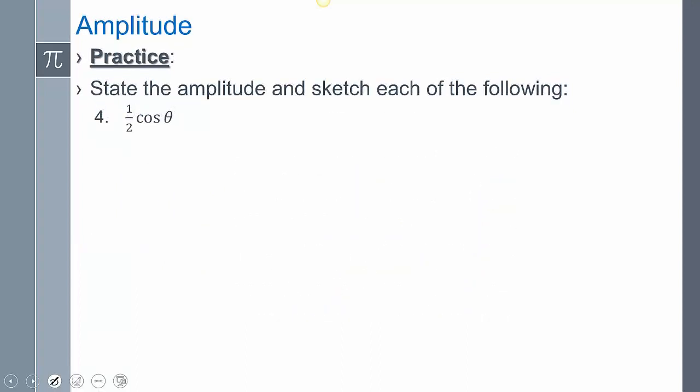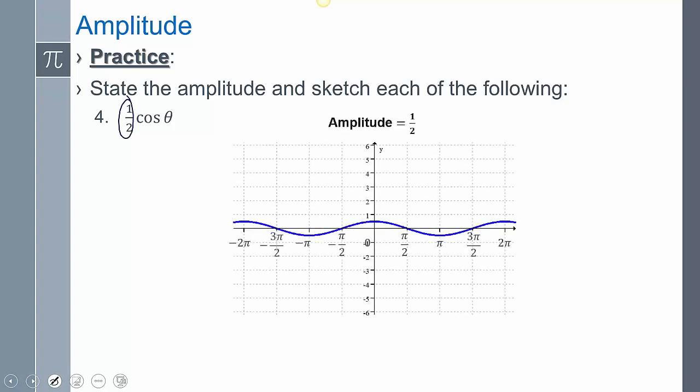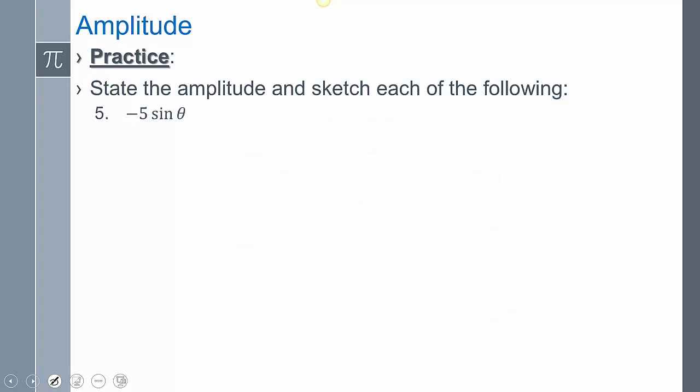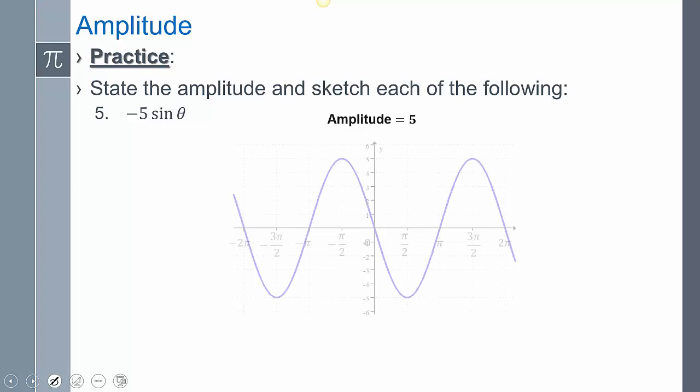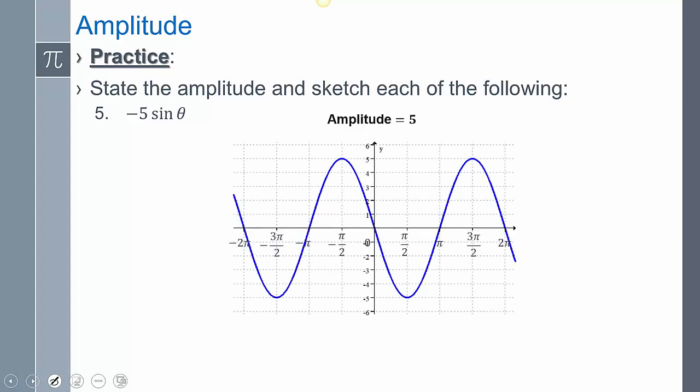For this right here, my amplitude is 1 half. So that is a vertical shrink. Just looking at the graph here. So what is my amplitude here? It says negative 5 sine theta. I'm hoping you guys said positive 5. The negative means it's a reflection. So normally, the graph did this. But because of that negative, that's why everything reflected downward when we went through and do the sketch. But we're going to talk about this more in class, so no worries.